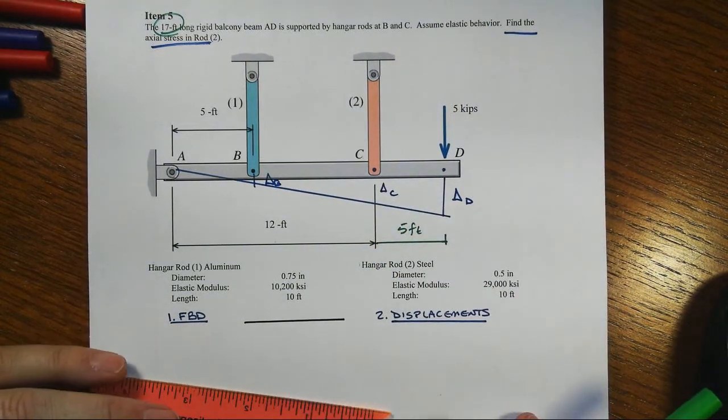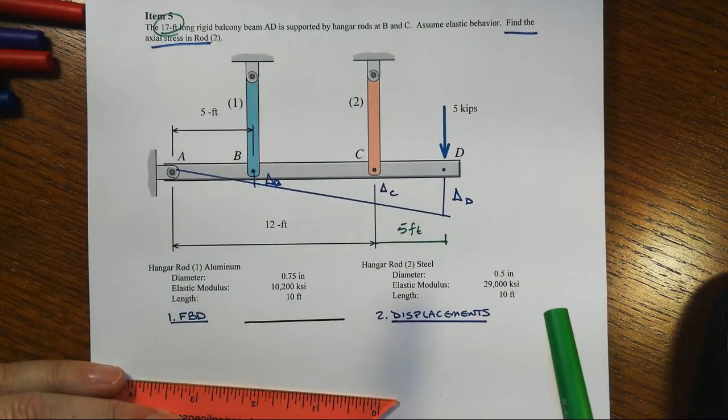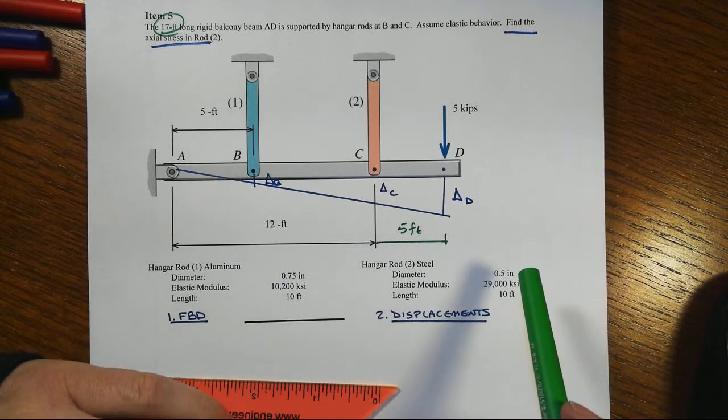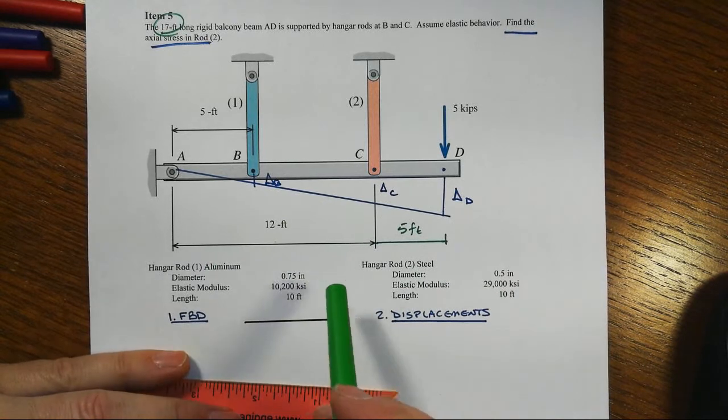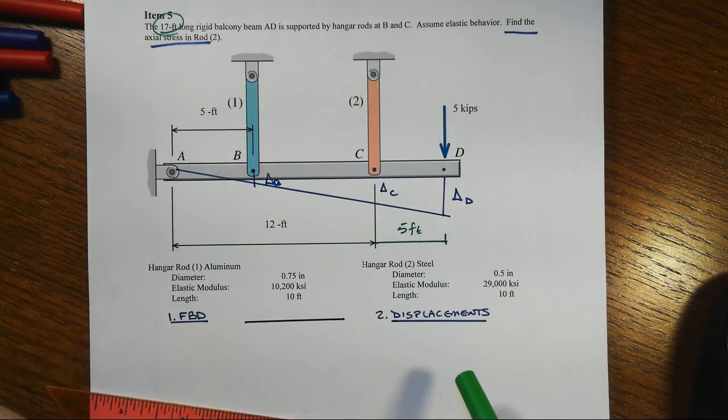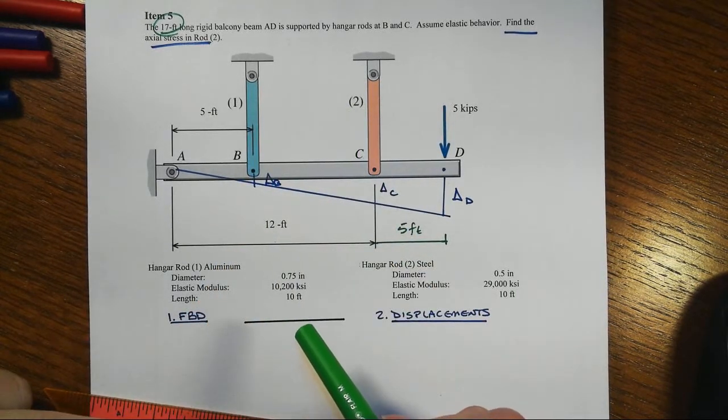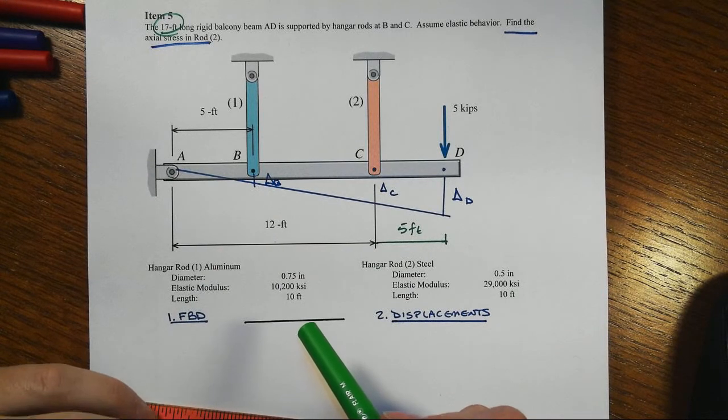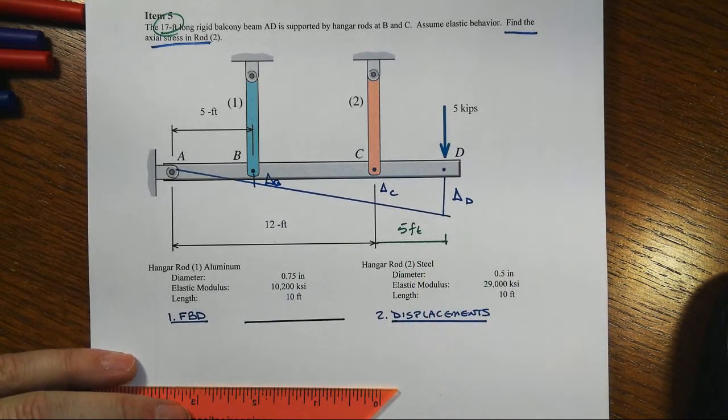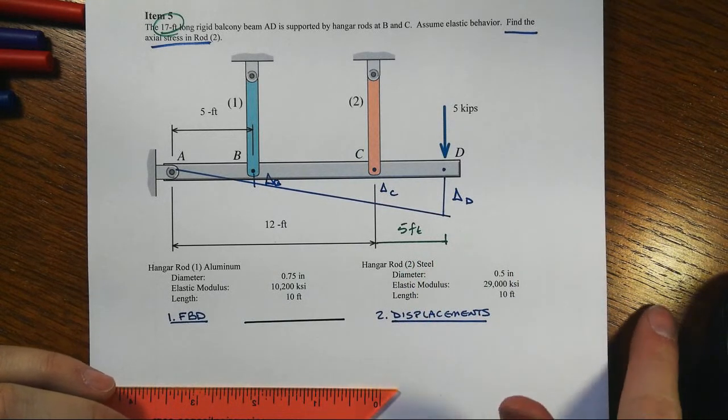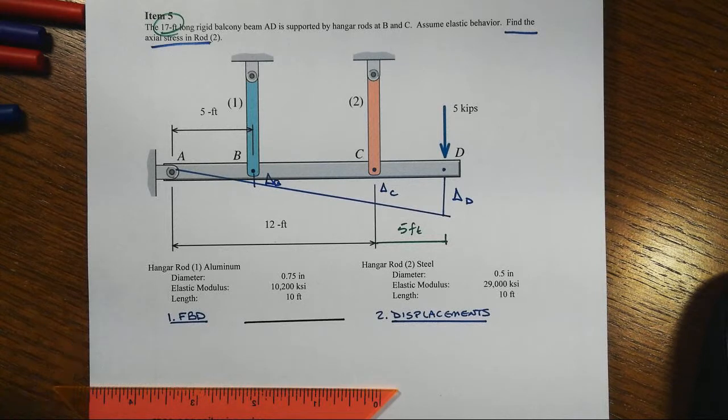It certainly simplifies some of our modeling. The rod number one is aluminum, rod number two is steel. In real practice, this would be a little unusual to have different materials in the hanger rods. It's also unlikely that we would have different diameters. So this is a little bit of an academic problem. Each one of the hanger rods is 10 feet long, so the geometry of the situation is actually relatively reasonable. The details are perhaps maybe not so practical.